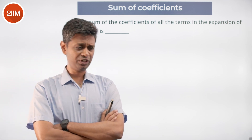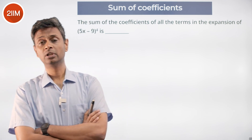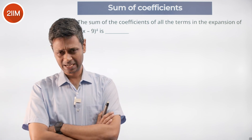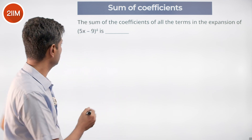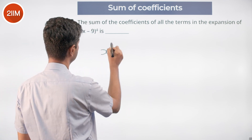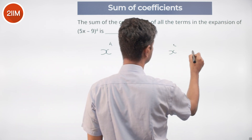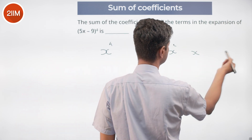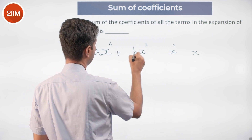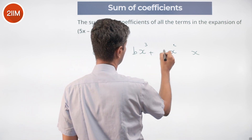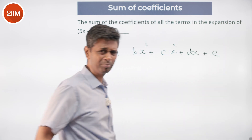Remember, every term barring the constant term will have an x in it. Every term is going to have a coefficient, and there is going to be an x^4 term, an x^3 term, an x^2 term, an x term, and a unit term. Let us say this expands as ax^4 plus bx^3 plus cx^2 plus dx plus e. That is what it becomes.